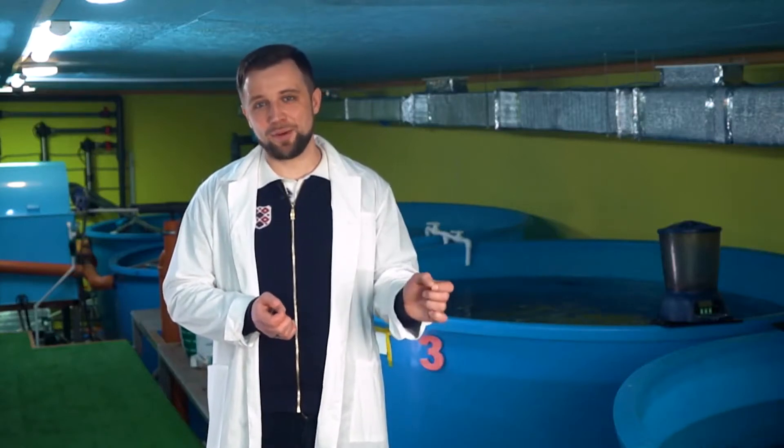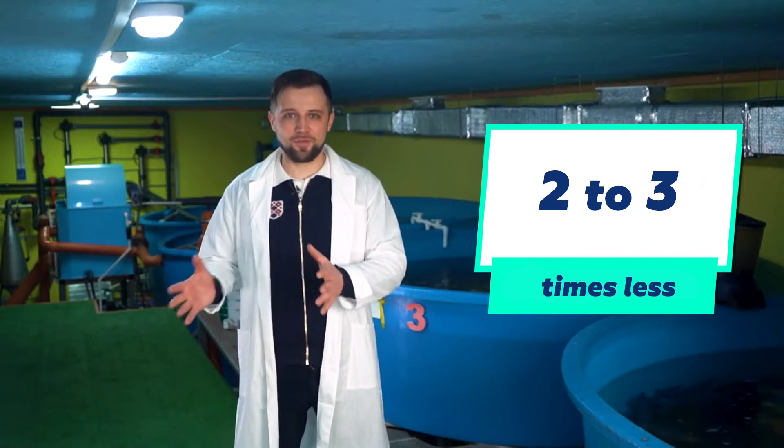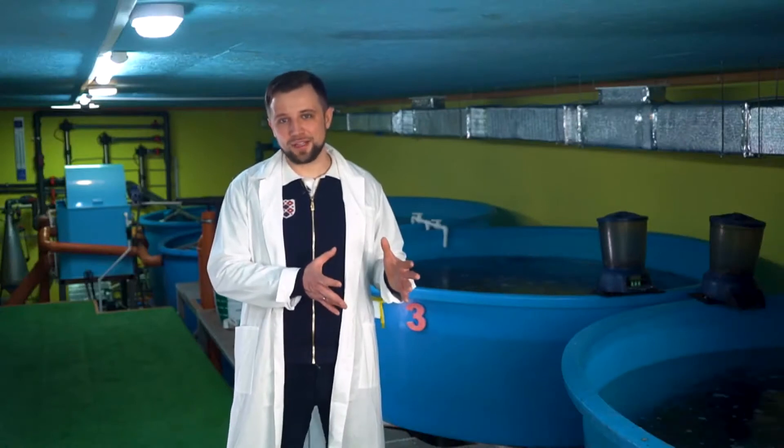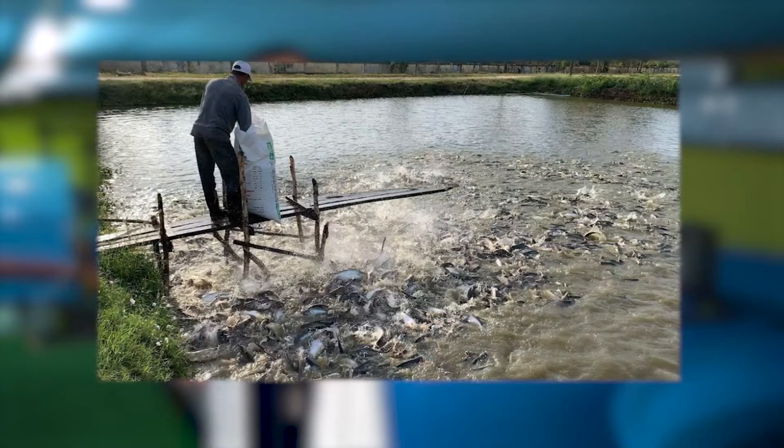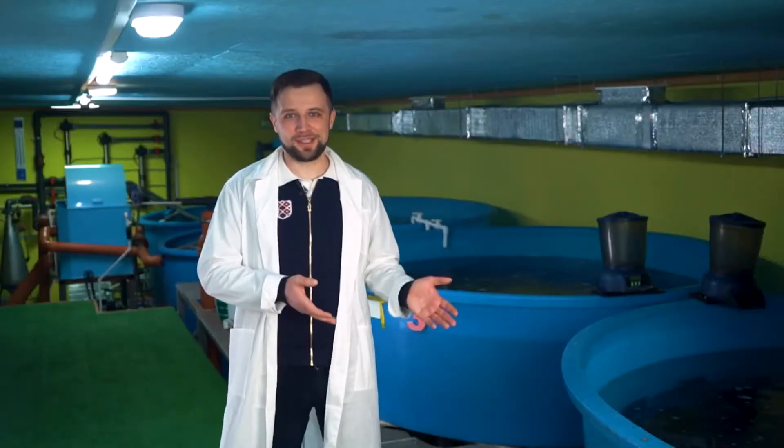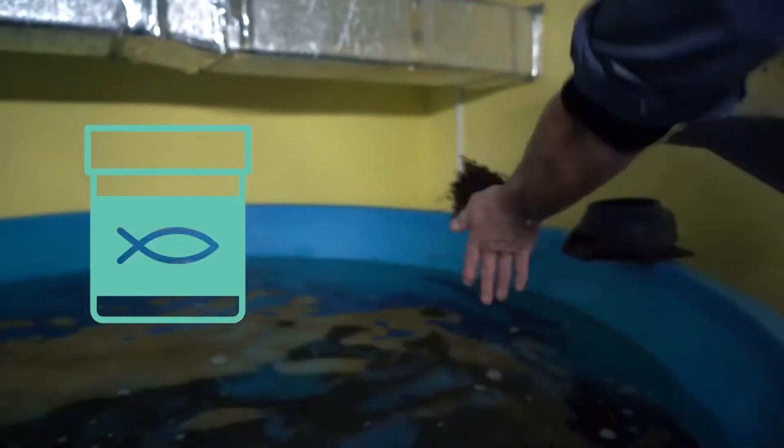In RAS, the amount of feed per kilogram of increase is about 2 to 3 times less than in open water sources. This happens because the feed is of much higher quality and is highly effective. If you feed fish in a pond, half of the feed will be eaten and the other half will be scattered. Everything that you feed to the fish in RAS is completely absorbed.